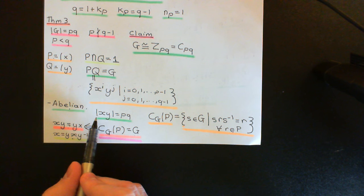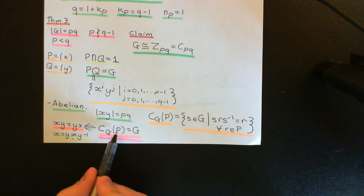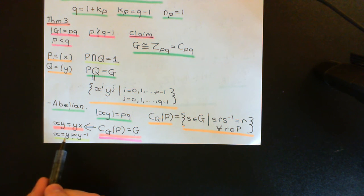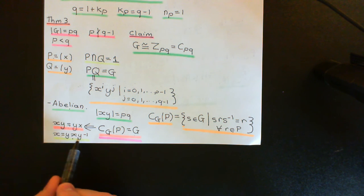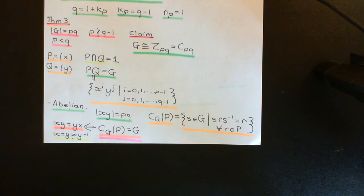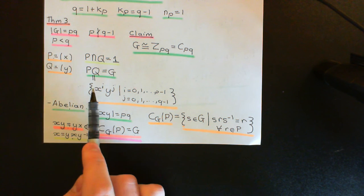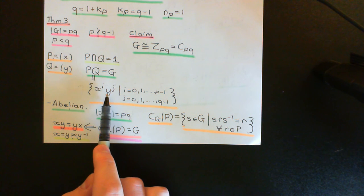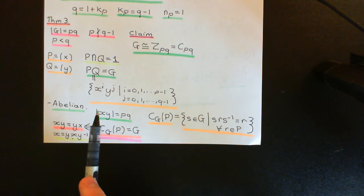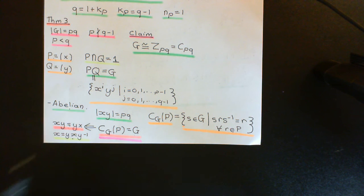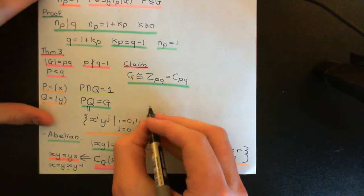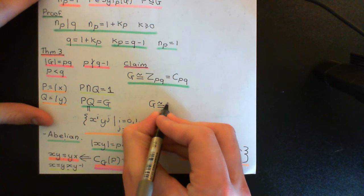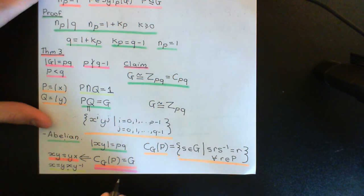We go right back to our initial assumption — that the centraliser of P in G was not equal to the entire group — and that must have been wrong. So we can conclude that the centraliser of P in G must equal the entire group, and therefore when we quotient out by it we'll just get the trivial group. All elements of the group represent the identity automorphism of P, so X composed with Y equals Y composed with X for any X in P and Y in G. We just add powers of X modulo P and powers of Y modulo Q, and therefore the element X composed with Y has order PQ. So we conclude that G is isomorphic to the cyclic group Z_PQ.